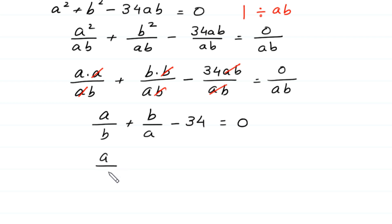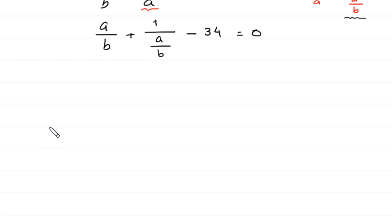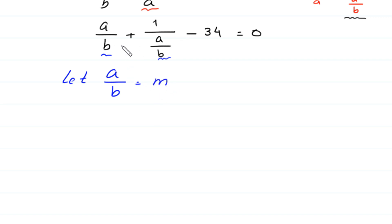Now, B over A can be written as 1 over (A over B). So we replace B over A with 1 over (A over B). We then let A over B equal M and substitute into the equation, giving M plus 1 over M minus 34 equals 0.